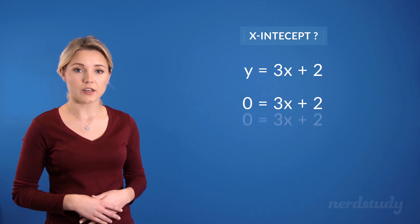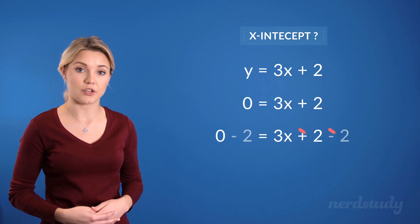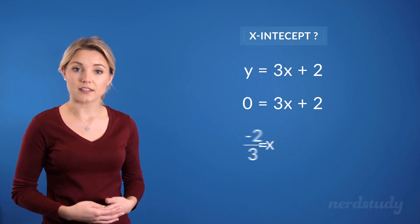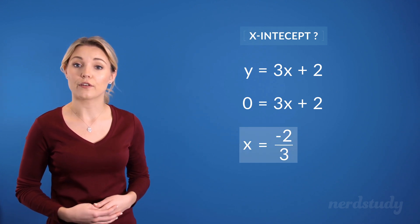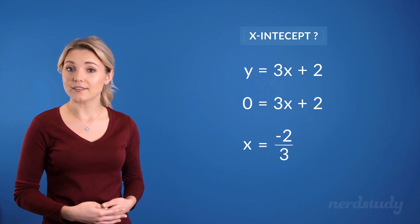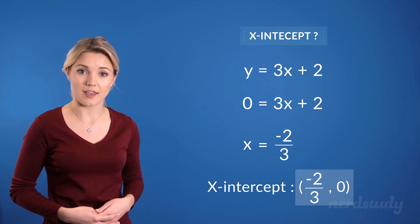Now, all we need to do is solve for x by subtracting both sides by 2, and then dividing both sides by 3, to get our x-value as negative 2 over 3, when y is equal to 0. Thus, our x-intercept occurs at negative 2 over 3, 0.